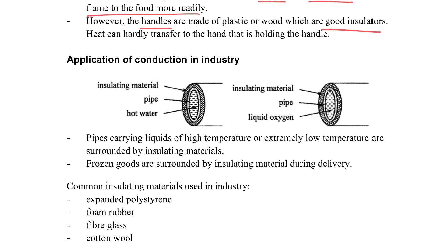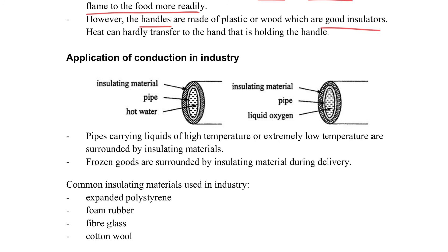For conduction in industry, pipes used to carry liquids with very high or very low temperatures have an insulating material added on the surface to prevent heat exchange. Common insulating materials used in industry are expanded polystyrene, foam rubber, fiberglass, and cotton wool.